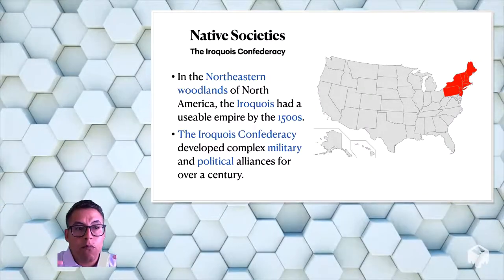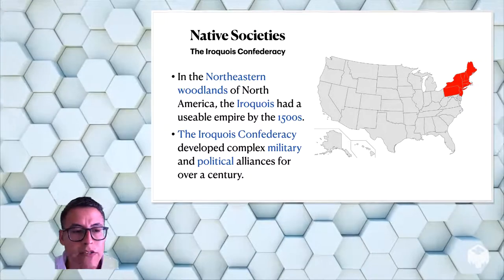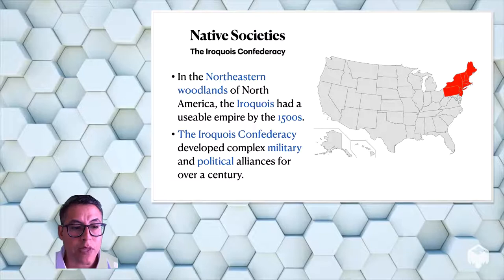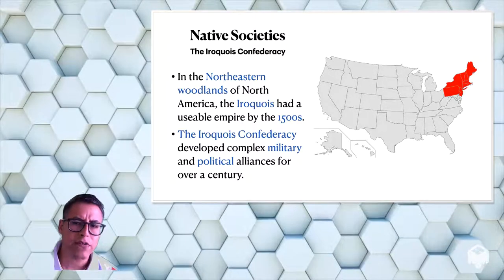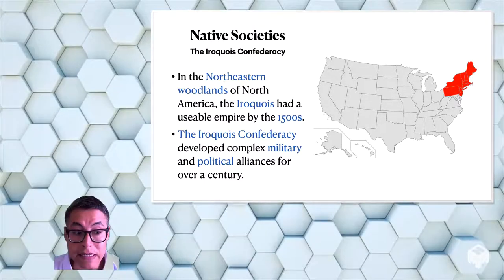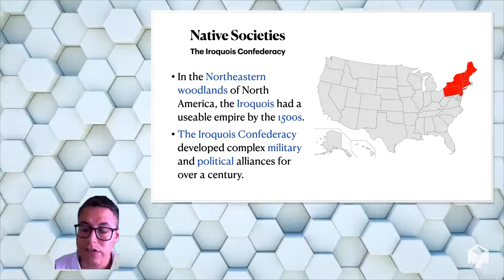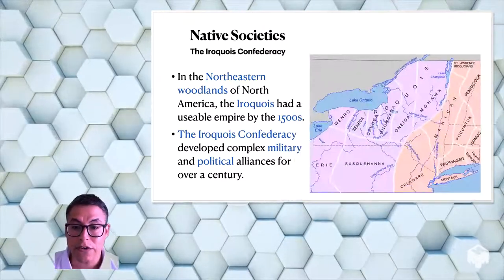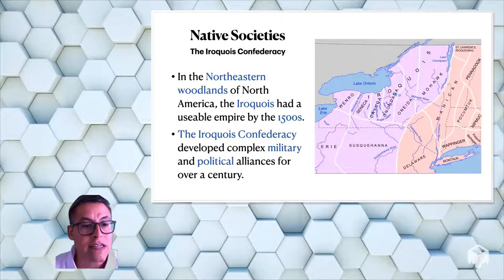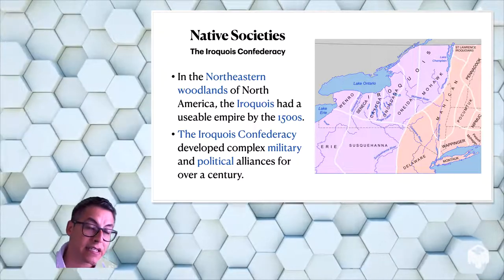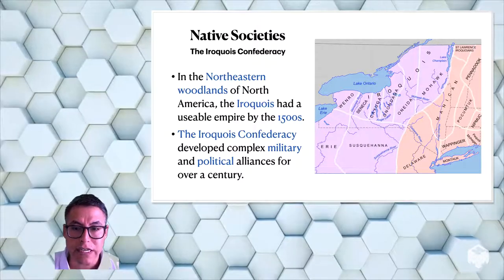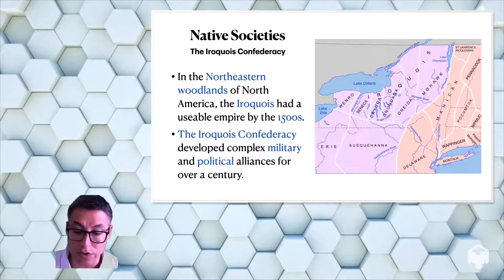Because of that agriculture, more and more societies were able to grow more and more complex. And so one of them was in the northeastern woodlands of North America, and they're called the Iroquois. And the Iroquois had an empire that was pretty sizable by 1500. And so by the time that Europeans arrived in what is now North America, they had a confederacy. A confederacy is like a loose union. And they had complex military and political alliances that lasted over a hundred years. They had several nations kind of loosely tied together through trade and through protection, through alliances. They also traded all the way from the St. Lawrence River region in what is now the Great Lakes area, all the way to the Gulf of Mexico.